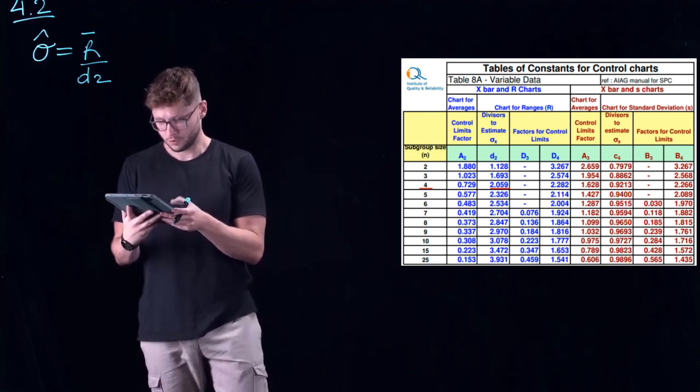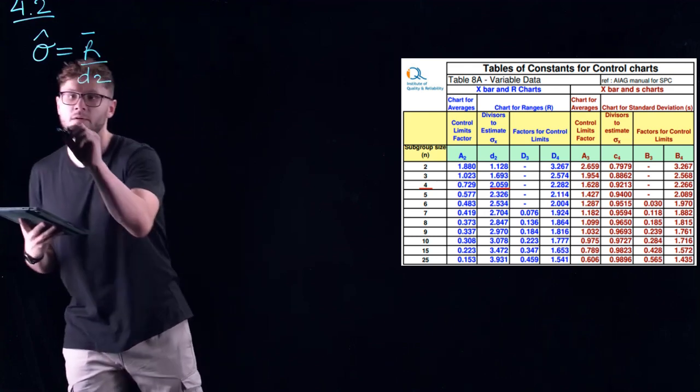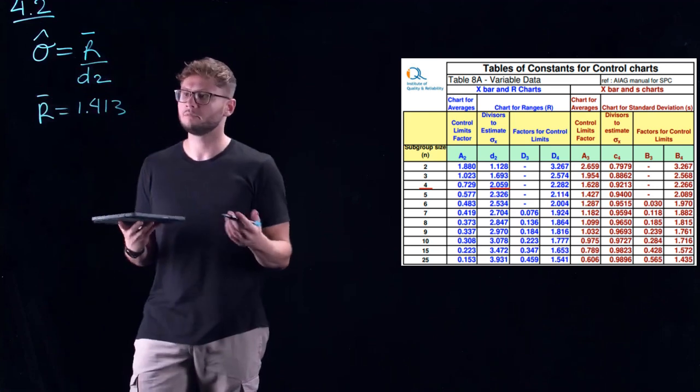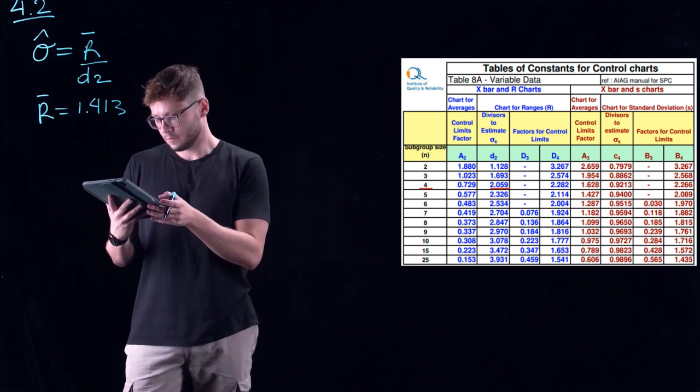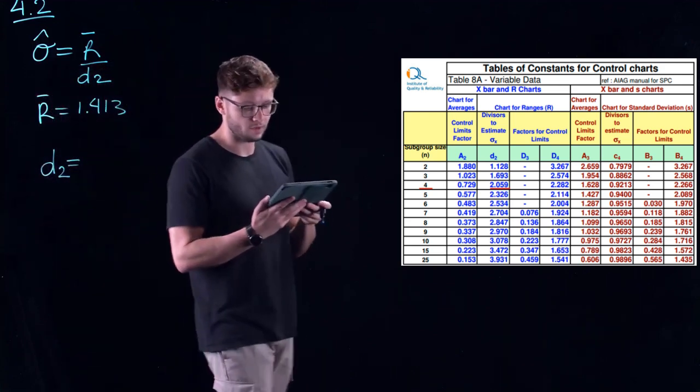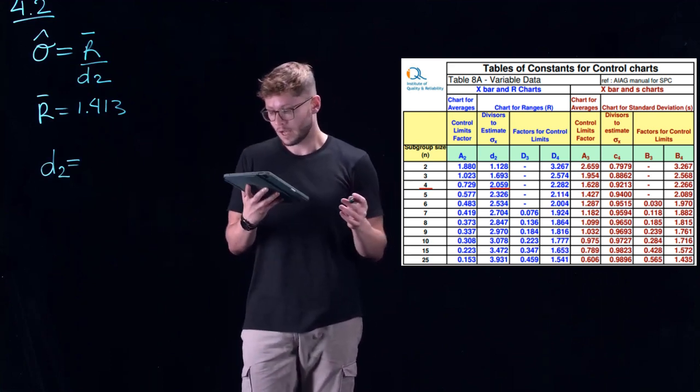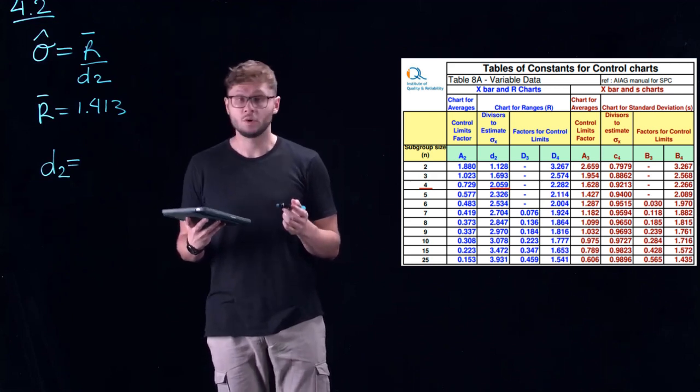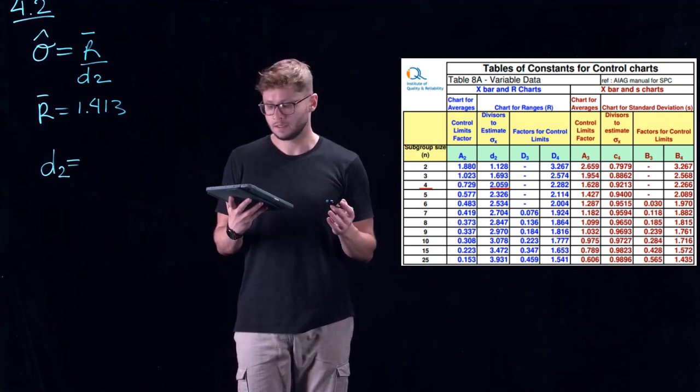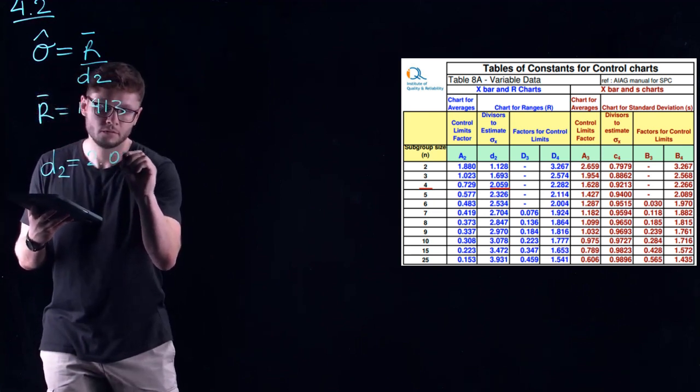D2 is a constant that we pick up from our table of constants for control charts. Here we require R bar, which we have from the original table of data. R bar equals 1.413. These types of problems are a lot of plug and play. Find the correct information, plug it in, and solve. For D2, we will go to our control chart table of constants. Since we have 15 subgroups and each subgroup contains four samples, our subgroup size is four. The corresponding D2 value is going to be 2.059.